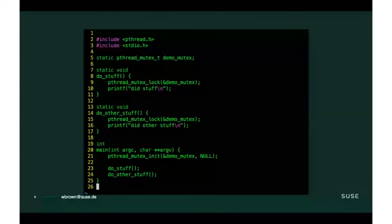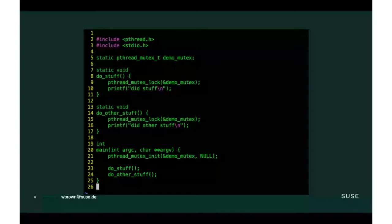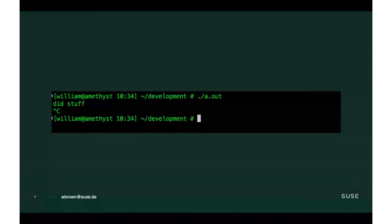An example more relevant to us as software engineers is something here in C. Many of you are astute and I hope some of you have already identified the problem with this code. When using something in C and trying to take a lock, we might use the pthread_mutex_lock function. But in this example, I don't actually unlock the lock, which means that, predictably, if we were to run this code it would deadlock. And that's really frustrating.